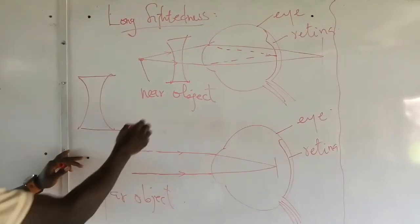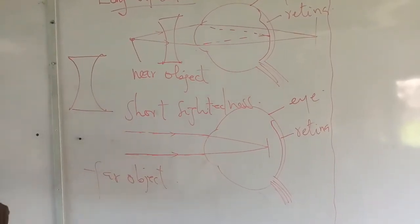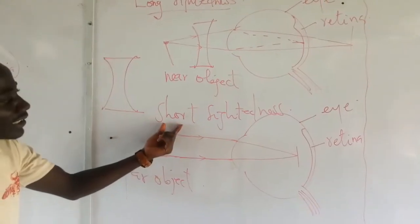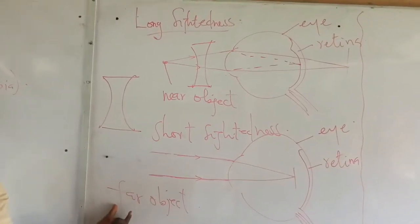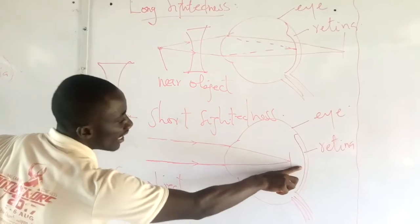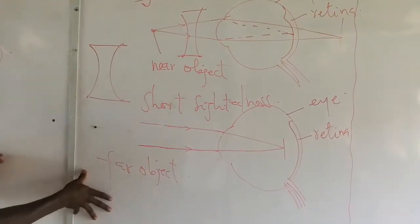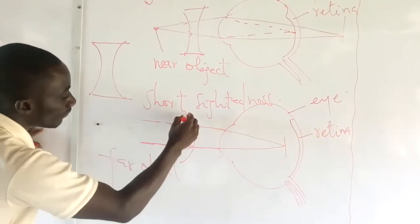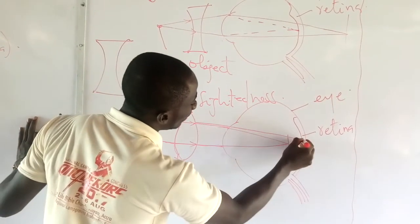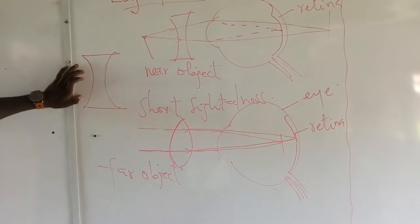Now let's come to the second one: short-sightedness. Short-sightedness is the direct opposite of long-sightedness — when the object is found closer, the person can see; but when the object is found far off, the person cannot see. Why? Because when the object is far away, the light rays are excessively refracted and meet in front of the retina rather than on it, so no image is formed. To correct short-sightedness, you need a divergent lens. When you use a divergent lens, it causes the light rays to spread out and meet correctly on the retina so that the image can be formed.